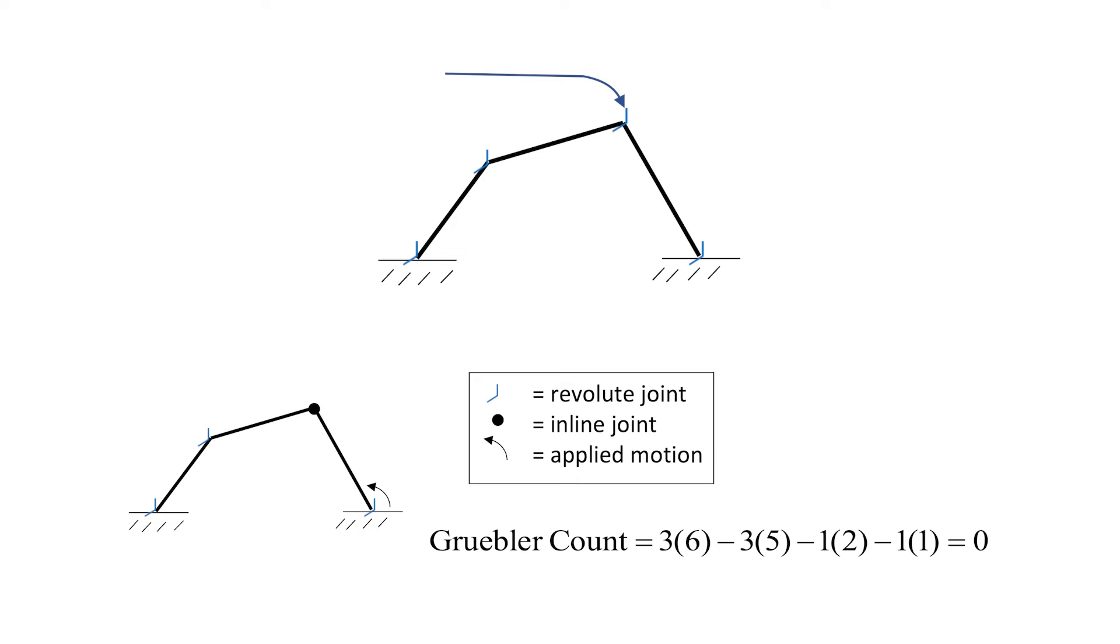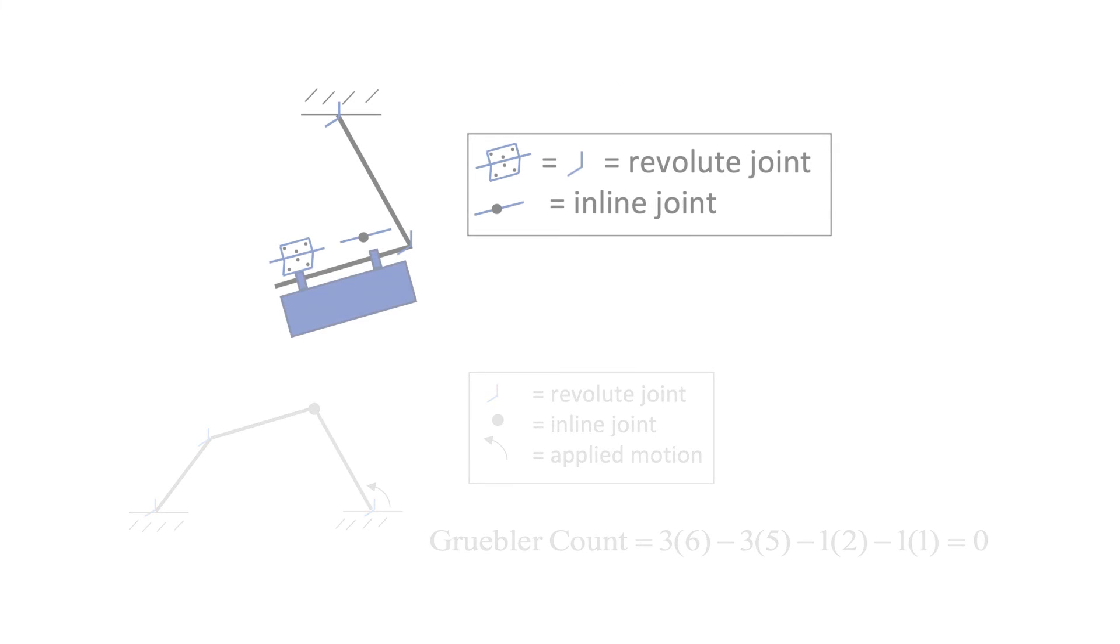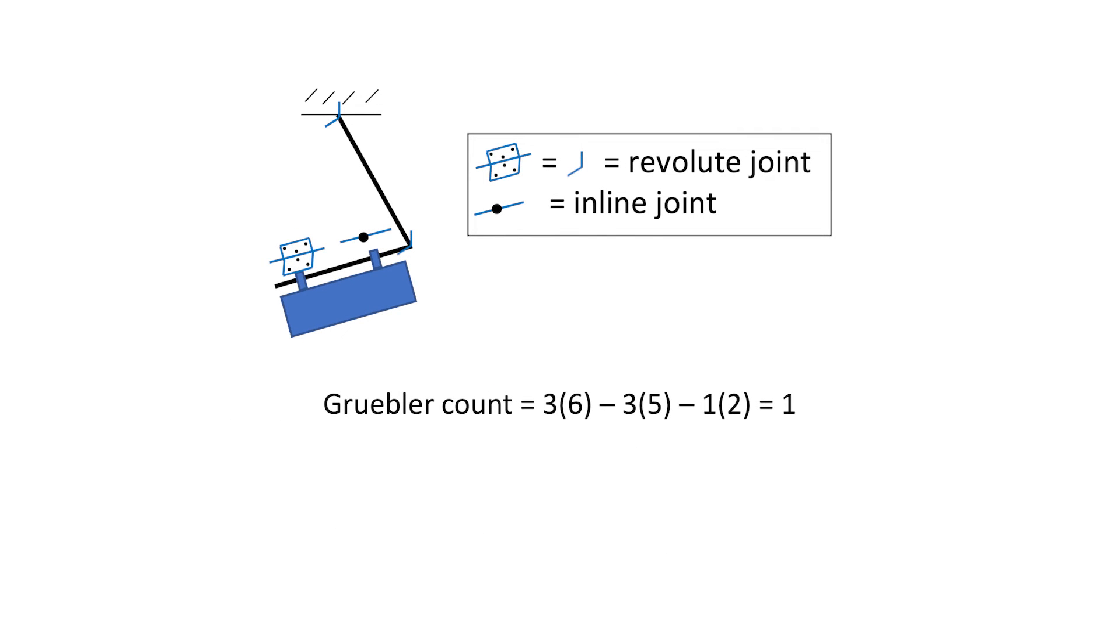And for a motion solver to work, redundant constraints must first be removed. Calculating the Gruebler count with the inline constraints gives a value of zero, meaning the motion is fully prescribed. Note that if we remove the motion, the system would have one degree of freedom. In other words, it is now free to articulate, but the motion of all parts is determined by specifying the motion of any one part.